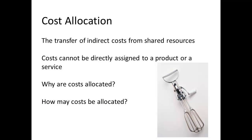Cost allocation refers to how we transfer costs from shared resources. We call these costs indirect costs, and they include shared resources such as the costs associated with human resources, accounting, and providing cleaning and security services. These are all costs that cannot directly be assigned to a product or a service. We start by asking two questions: why are the costs allocated, and how may we allocate the costs?